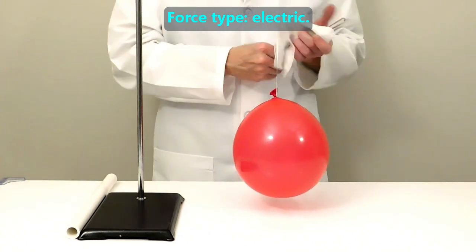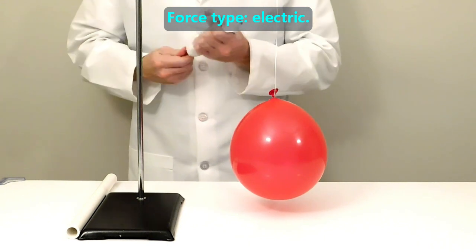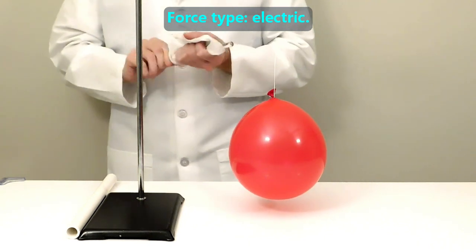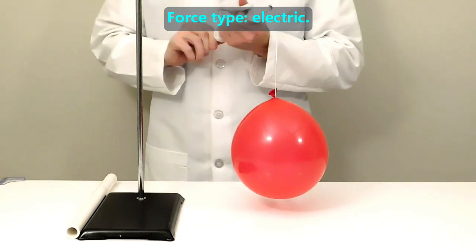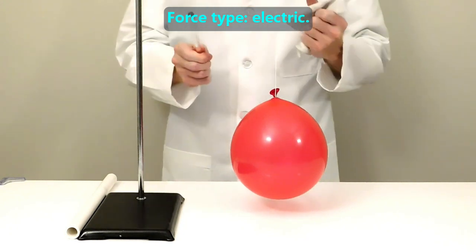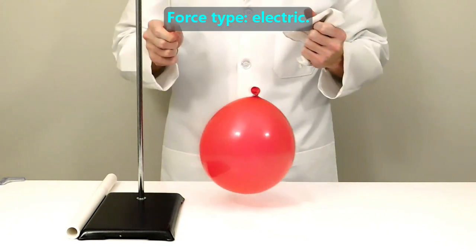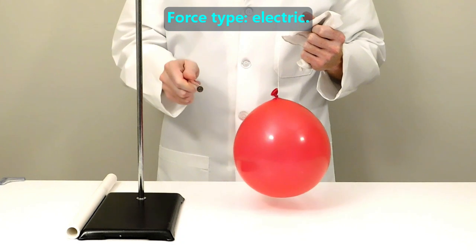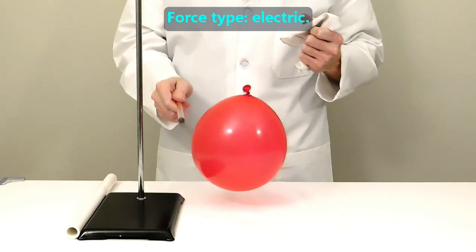Next, he puts a positive charge on the glass rod by rubbing it with a silk cloth. When he puts the positively charged glass rod next to the negatively charged balloon, they attract each other. This is similar to how magnets pull each other closer when their opposite poles are facing each other.